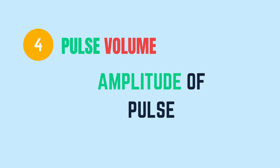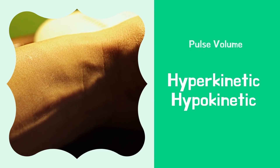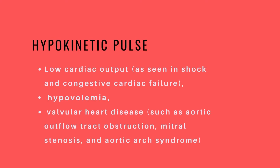Pulse volume is the degree of expansion displayed by the artery during the diastolic and systolic state. It can be measured as either hypokinetic or hyperkinetic pulse, depending on its characteristics. A hypokinetic pulse indicates narrow pulse pressure — a feeble pulse. This is associated with low cardiac output as seen in shock and congestive cardiac failure, hypovolemia, valvular heart disease such as aortic outflow tract obstruction, mitral stenosis, and aortic arch syndrome, among other factors.